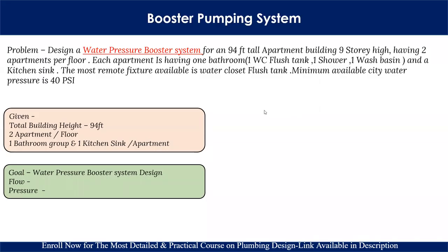Let's understand the direct pressurized system with the help of an example. In this problem, we have to design a water pressure booster system for a 94-feet-tall apartment building. The building type is an apartment, nine stories high, having two apartments per floor. Each apartment serves one bathroom with a flush tank WC, one shower, one wash basin, and a kitchen sink. The most remote fixture is the water closet — the farthest fixture from the booster set. The minimum available city water pressure is 40 psi.